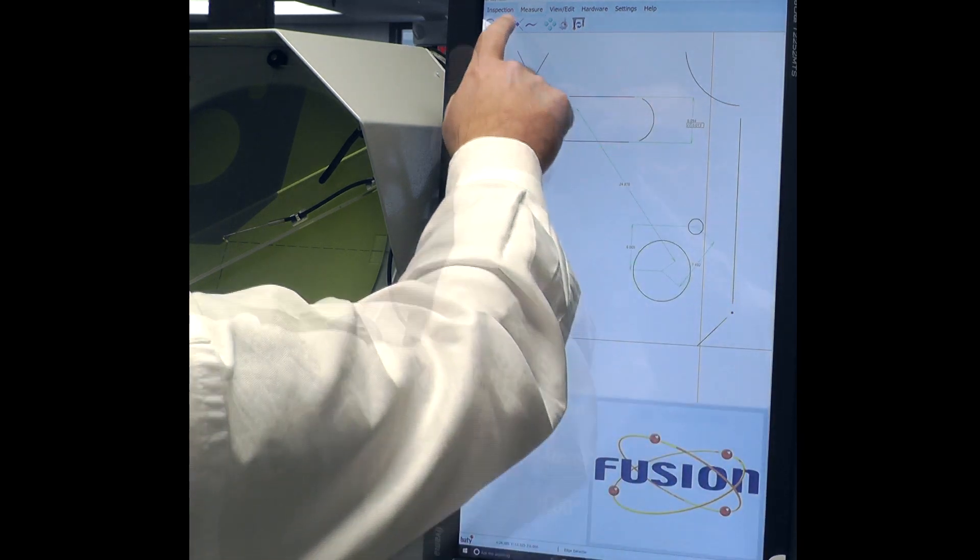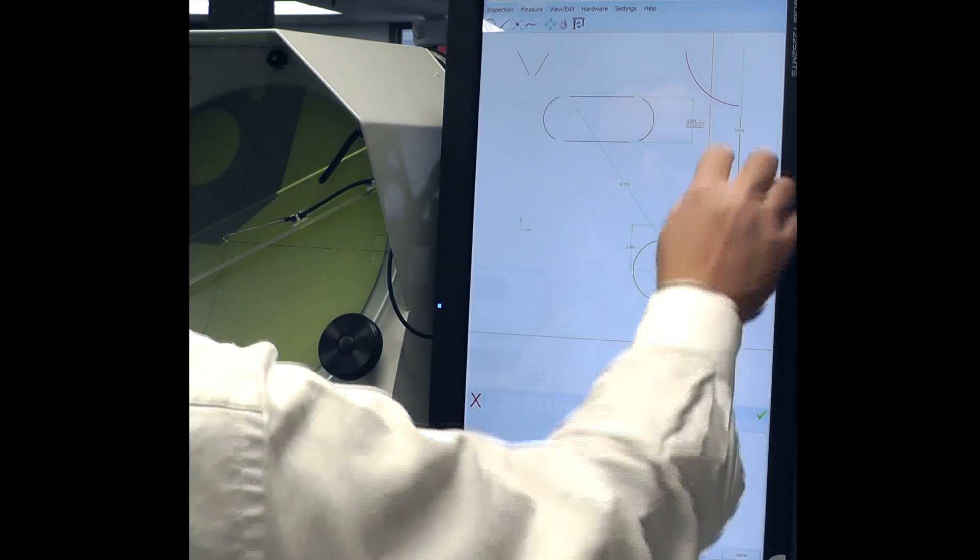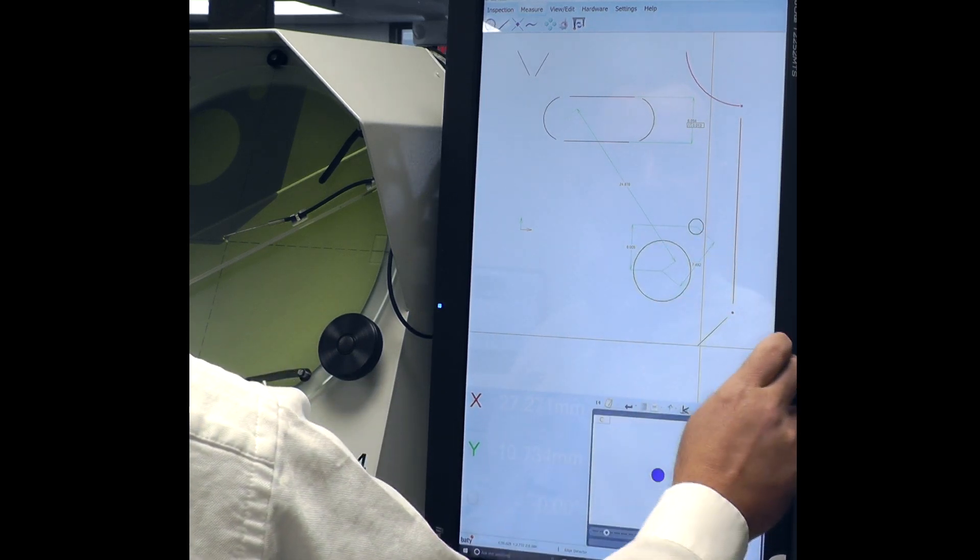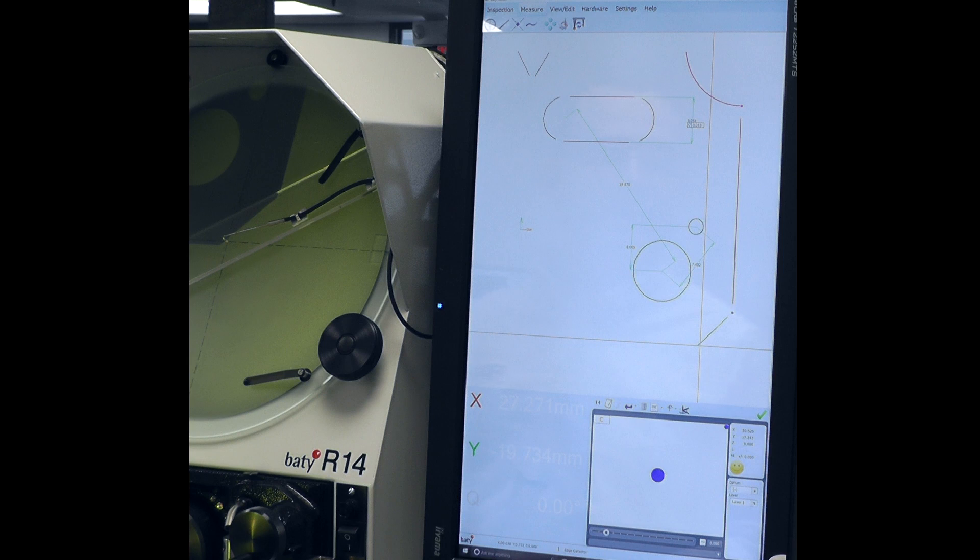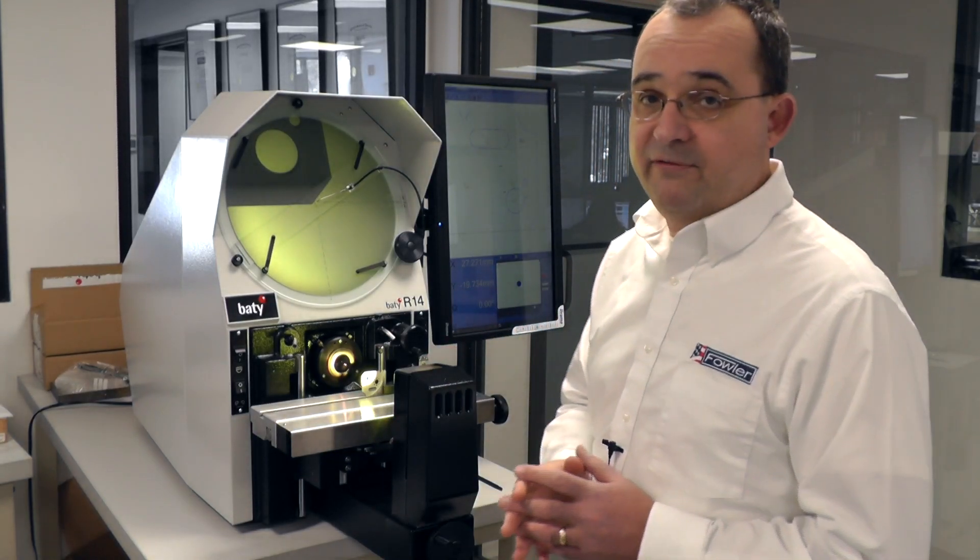I can do the same thing with arcs. I can select point, construction, select the two features I would like to construct that arc with. And I've generated a point at the intersection of those two. Those points can then be referenced to anything else in the measurement field that we choose.